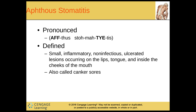And then we have aphthous stomatitis. This is a small inflammatory non-infectious ulcerated lesion occurring on the lips, tongue, and inside the cheeks of the mouth, also called a canker sore. I get them all the time. My mom and dad used to say if you got one on the tip of your tongue it was called a lie bump. Or if you jam your toothbrush too hard into your gum or lip, you can get a little canker sore.